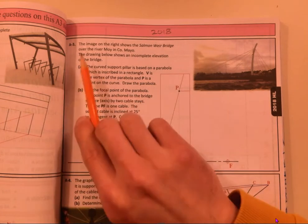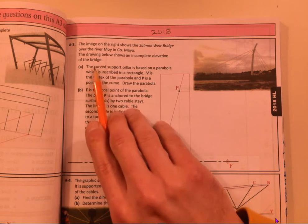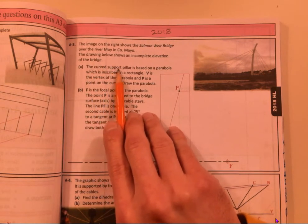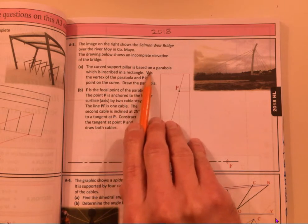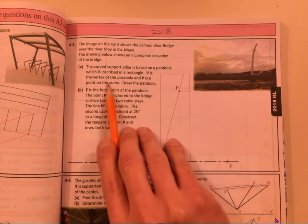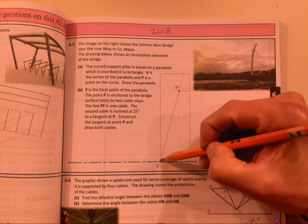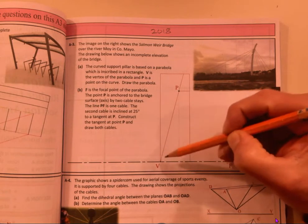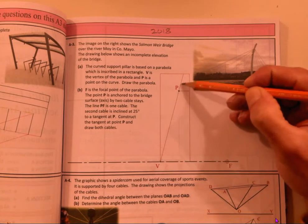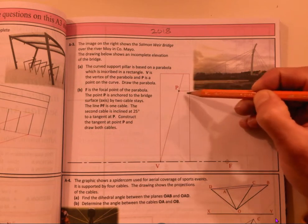It's to do with the Salmon weir bridge. Don't need to read about the start of it. The curved support pillar is based on a parabola which is inscribed in a rectangle. V is the vertex of the parabola and P is a point on the curve. Draw the parabola. So your question is basically you're given V, you're given the box that the parabola goes into, you just need your junior construction to draw out the parabola. They've already kind of half done it for you, but you could even ignore that. You could just go and draw your parabola as you normally would.